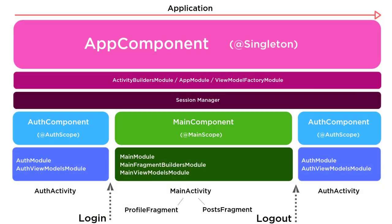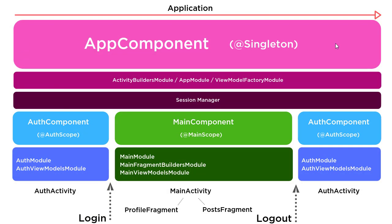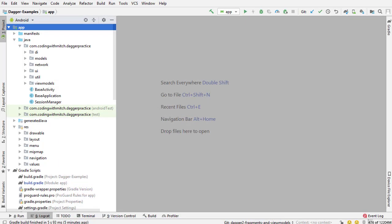Let's review the diagram. We have an application-level component called the App Component that is meant to stay alive for the entire lifetime of the application. It's about components that stretch certain parts of the application, and those components contain dependencies or objects that should be used only in those components. If you want an object to last the entire lifetime of the application, put it in the App Component. If you want a dependency to last only a certain piece of the application's lifetime, put it in a subcomponent. In this case, we have two subcomponents: Auth Component and Main Component.